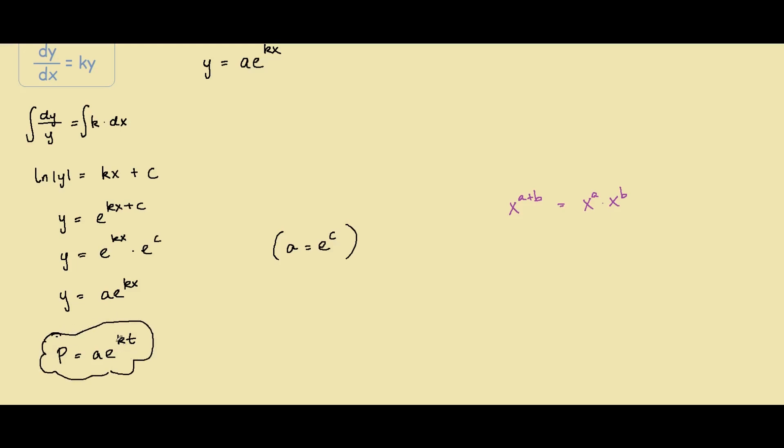Our k value determines the instantaneous growth rate. If k is less than zero, our population is decaying exponentially. If it's greater than zero, our population is increasing exponentially.